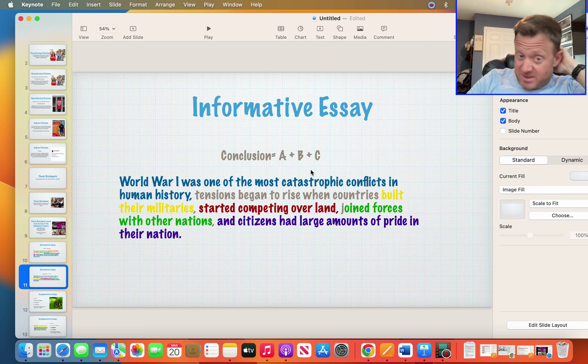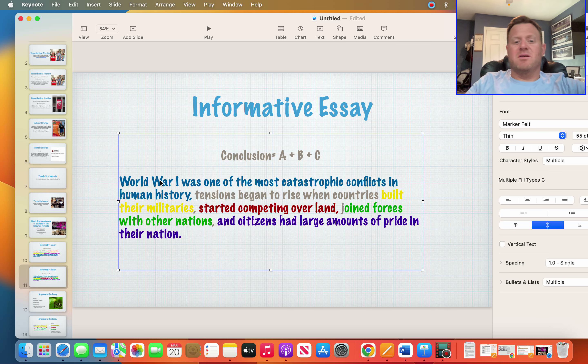You can also use the opposite, and it didn't work as well for this one. Again, conclusion: World War I was one of the most catastrophic conflicts in human history. Tensions began to rise when countries built their militaries, started competing over land, joined forces within their nations, and citizens had large amounts of pride in their nation.